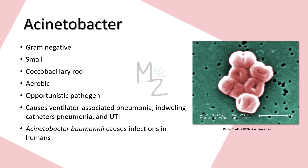It is aerobic — you can memorize this by noting that 'aerobic' starts with 'A,' same as Acinetobacter. Acinetobacter is an opportunistic pathogen, which means it readily colonizes patients with compromised host defenses. It is responsible for causing ventilator-associated pneumonia, indwelling catheter-associated pneumonia, and urinary tract infections.